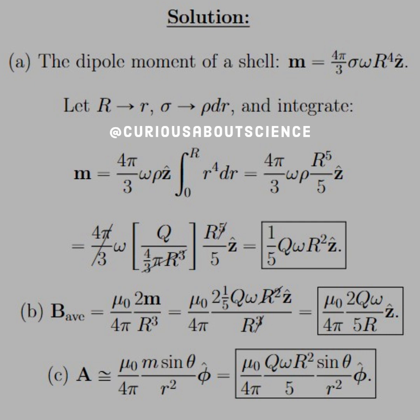But we know that rho itself is Q over the volume of a sphere, so Q over 4 pi over 3 capital R cubed. And we see we get a ton of cancellations. The 4 over 3 pi cancels, and we get R cubed canceling with R to the fifth, leaving us with a grand total of M equal 1 fifth Q omega R squared in the Z hat direction.